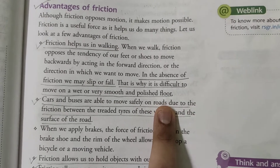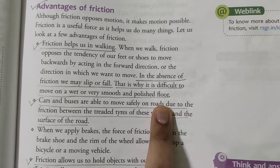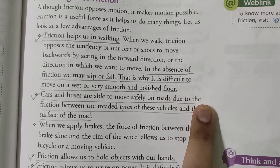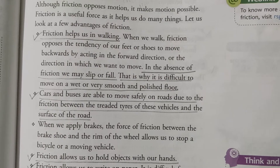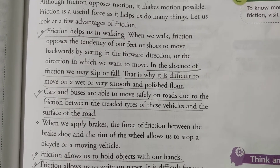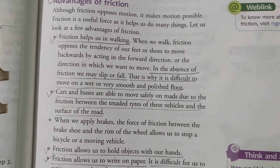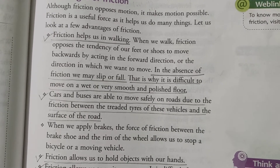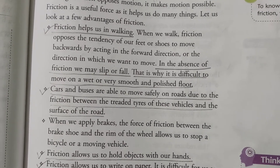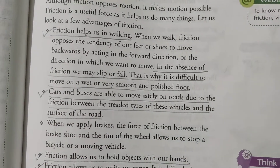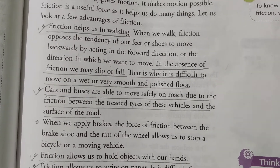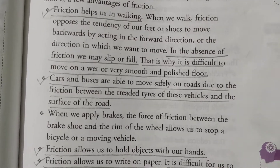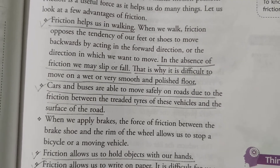Cars and buses are able to move safely on roads because of friction. If they tried to move on a very slippery floor, they would not be able to. Roads are a bit rough, and tires are made with grooved designs — not smooth or polished — so that the friction between the road surface and the tires is increased. We need some amount of friction so that vehicles won't slip while they try to move.